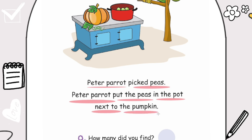Great job! Now, let's find all the words that begin with P. P-P-Peter. P-P-Parrot. Good job! Next one. P-P-Picked. P-P-Peas. P-P-Peter. P-P-Parrot. P-P-Put. Peas. P-P-Pot. Pumpkin. Great job!